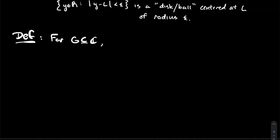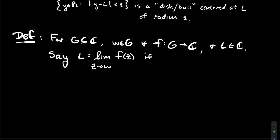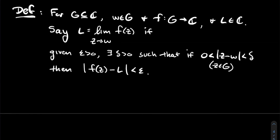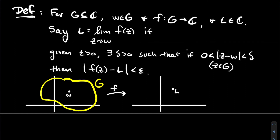Now let's generalize. Take a domain G of the complex plane, W in there, f a function whose domain is G, and let L be some complex number. What should it mean to say L is the limit of f of z as z approaches W? That means: given epsilon, there exists some real number delta such that if the modulus of z minus W is between zero and delta — the modulus of z minus W measures how far apart z and W are in the complex plane — then f of z and L are sufficiently close, within that little epsilon ball around L.